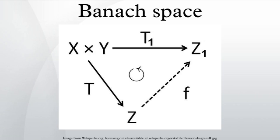The Gelfand–Naimark theorem states that every C*-algebra is isometrically isomorphic to a C*-subalgebra of some B(H). The space C(K) of complex continuous functions on a compact Hausdorff space K is an example of a commutative C*-algebra, where the involution associates to every function f its complex conjugate f̄.